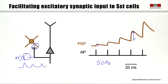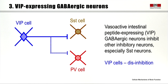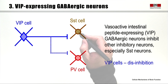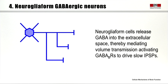The VIP-expressing GABAergic neurons are also extremely interesting. VIP stands for vasoactive intestinal peptide, and while we don't know the functional role of VIP itself in the neocortex, it serves as a useful marker for a cell type. The VIP cells seem to have a specific role in inhibiting other GABAergic neurons — specifically somatostatin cells and to a lesser degree parvalbumin cells. So rather than causing overall inhibition in the neocortical microcircuit, VIP cells actually cause excitation via disinhibition.